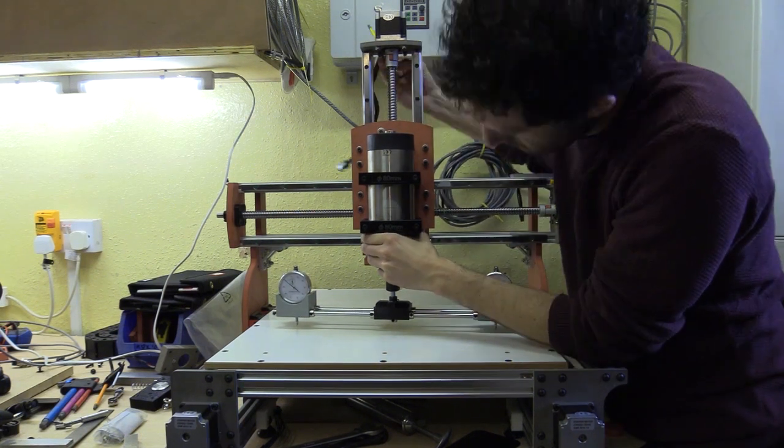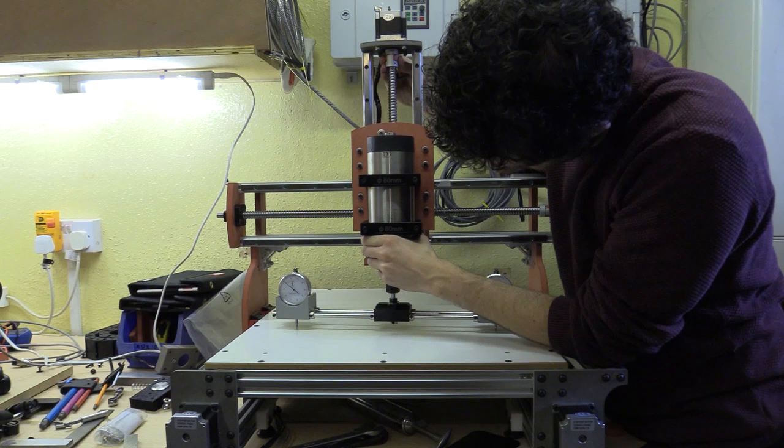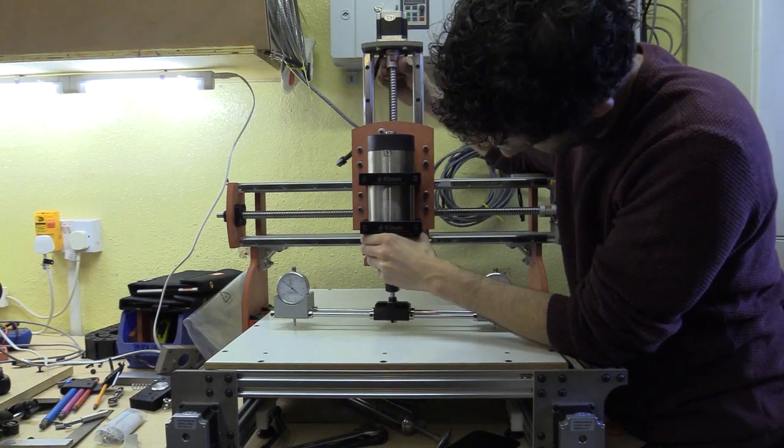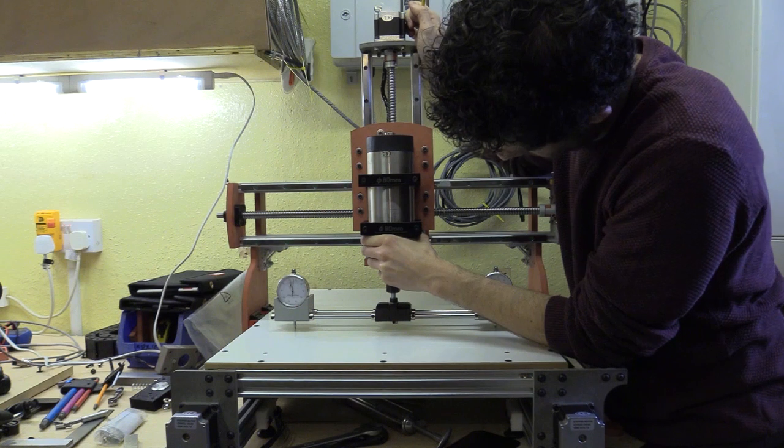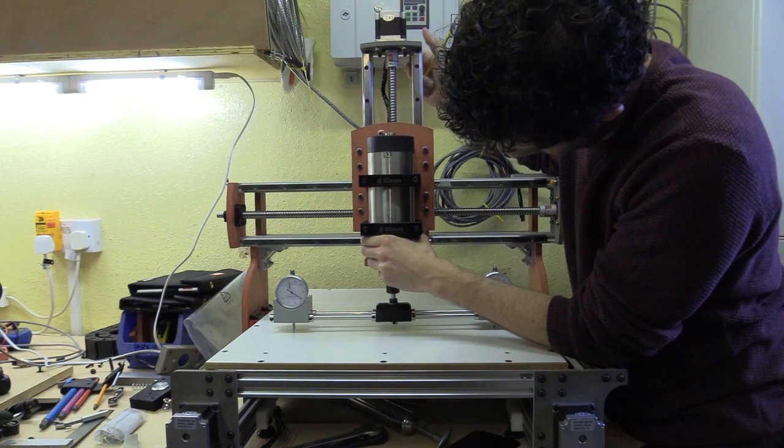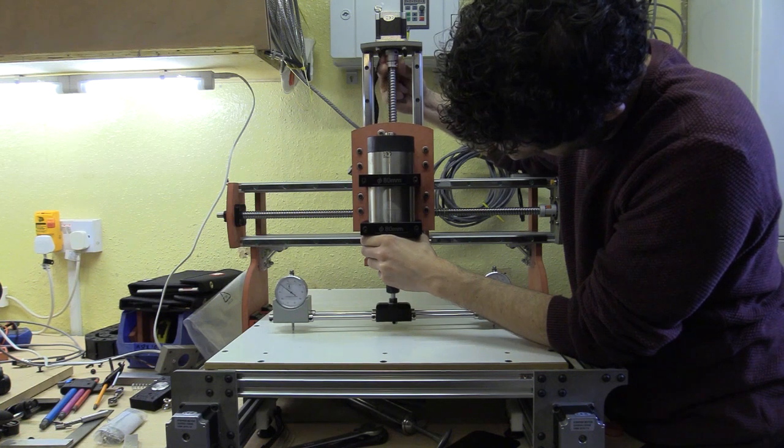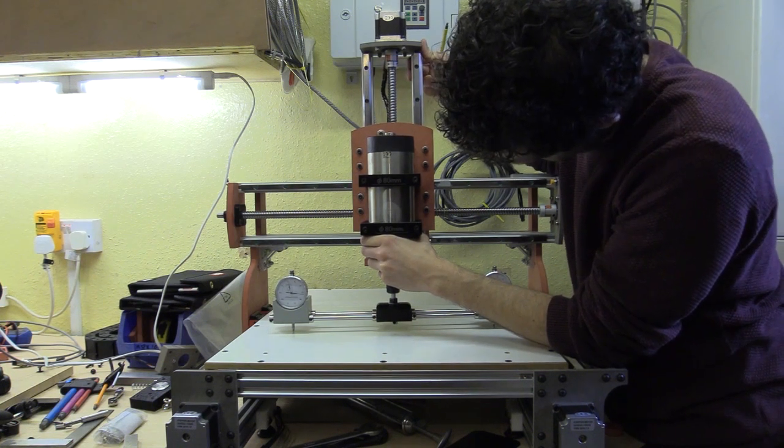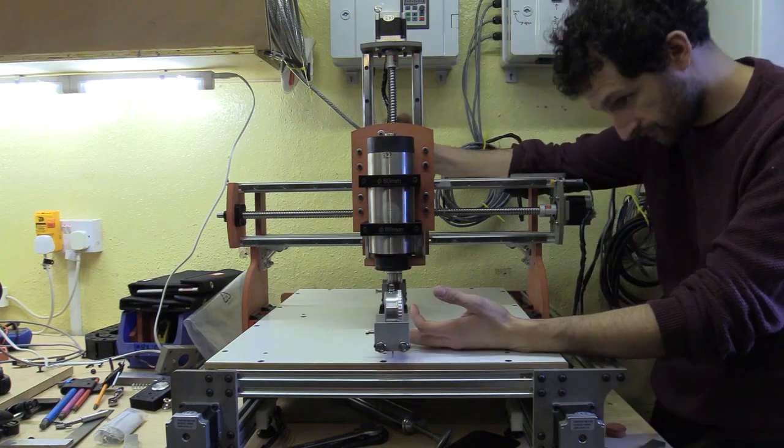I'm now tramming the jig along the x axis which involves carefully loosening some select machine screws and pivoting the spindle so the dial gauges read within 0.2mm of each other. I'm very careful here not to let the entire assembly slip and crush either my fingers or the jig. And once this is done I tighten the appropriate machine screws.